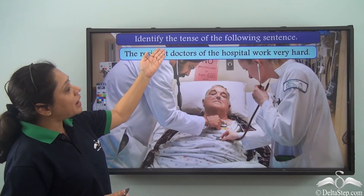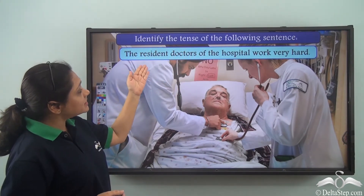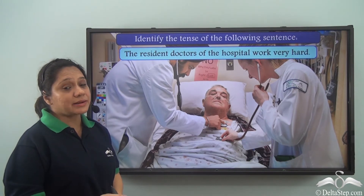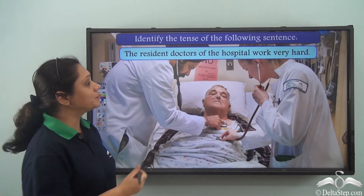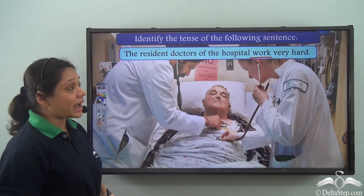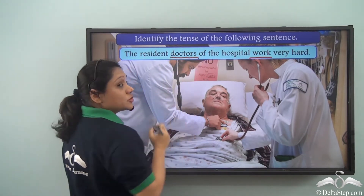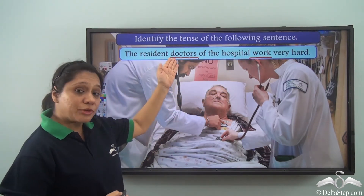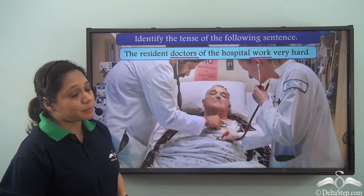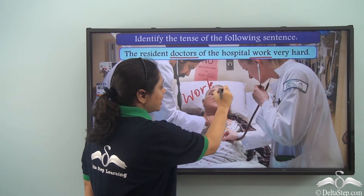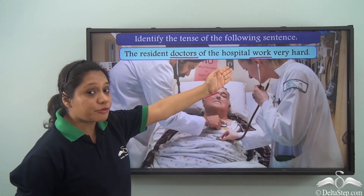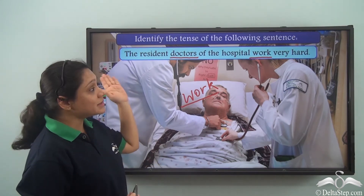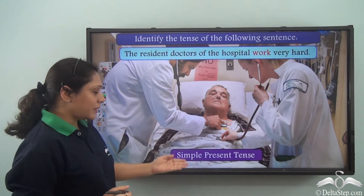Can you identify the tense of the following sentence: 'The resident doctors of the hospital work very hard'? The verb is 'work.' Doctors is plural, so we have used the plural form of the verb. The base verb is 'work,' and since we have used the plural form of the base verb, this sentence is in the simple present tense.